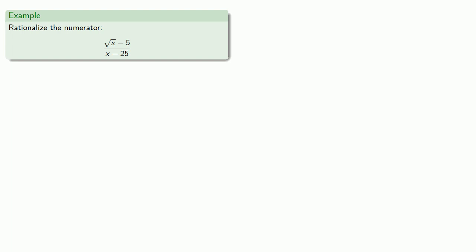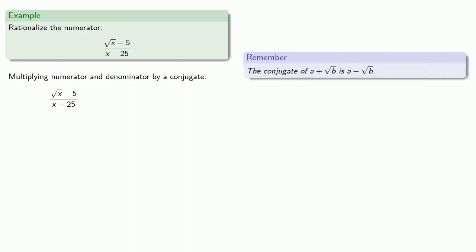And we can try to rationalize the numerator. So remember that we can rationalize a radical expression by multiplying by a conjugate. And remember, if you're dealing with a set of square roots, the conjugate is going to be the same terms, but you're going to change additions to subtractions and vice versa. So multiplying numerator and denominator by the conjugate.